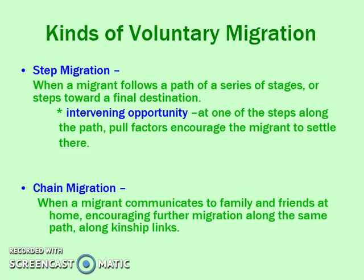Chain migration is related to kinship links. When family and friends move somewhere, they write back, they call, they talk about how great it is, and it creates a migration of other family members to that place. This is often why you have ethnic neighborhoods that originate somewhere — because people hear about it and want to live near people of their same culture group.